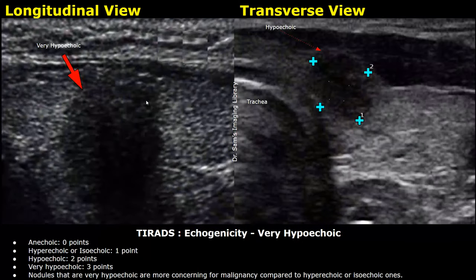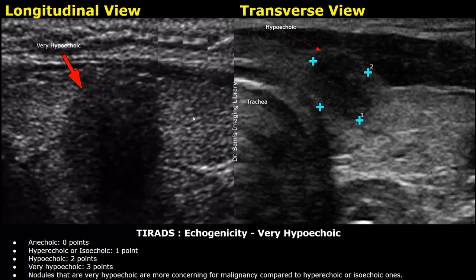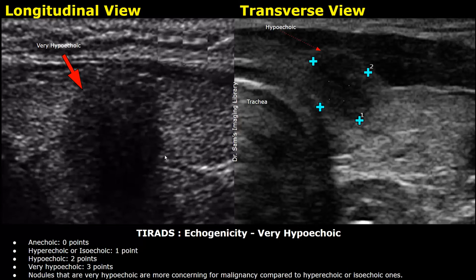Very hypoechoic nodules are very concerning for malignancy and are given three points. They appear even darker, almost black, with echogenicity much lower than normal thyroid tissue. A key feature to identify a very hypoechoic nodule is the absence of posterior acoustic enhancement — it is a solid nodule, not cystic.